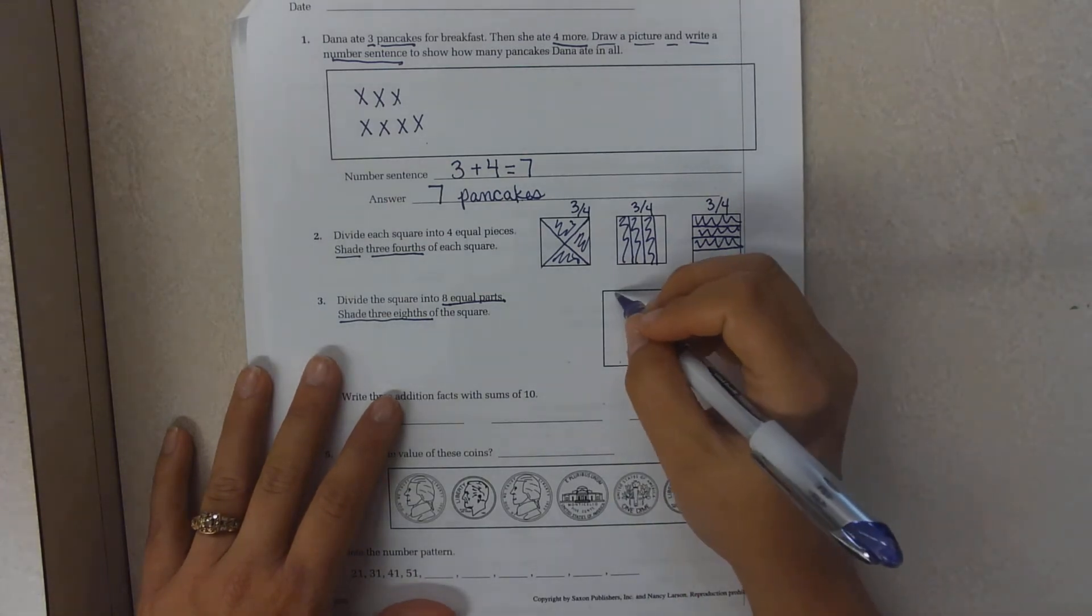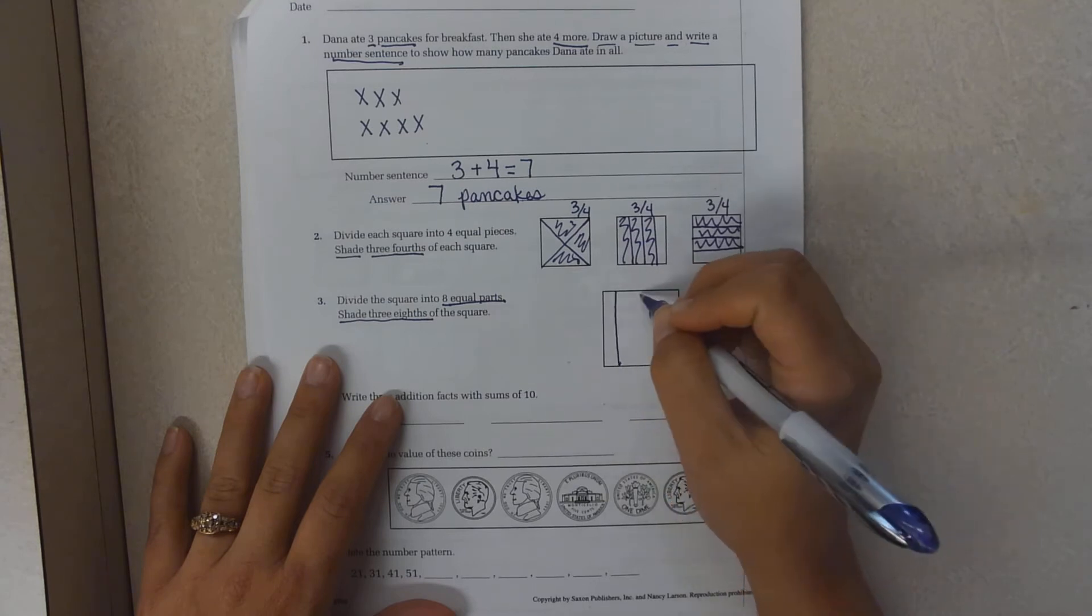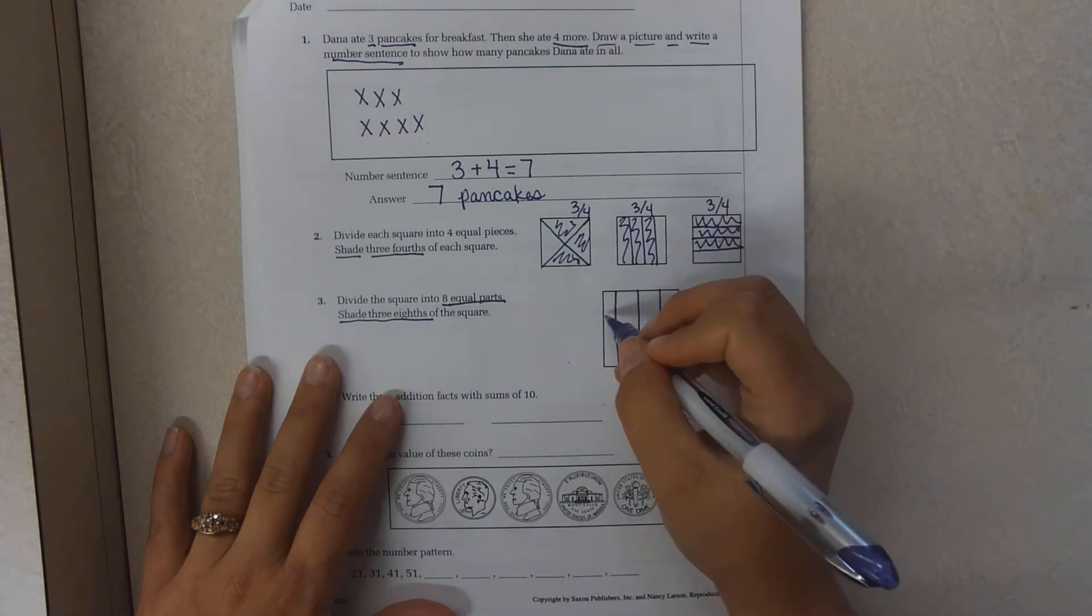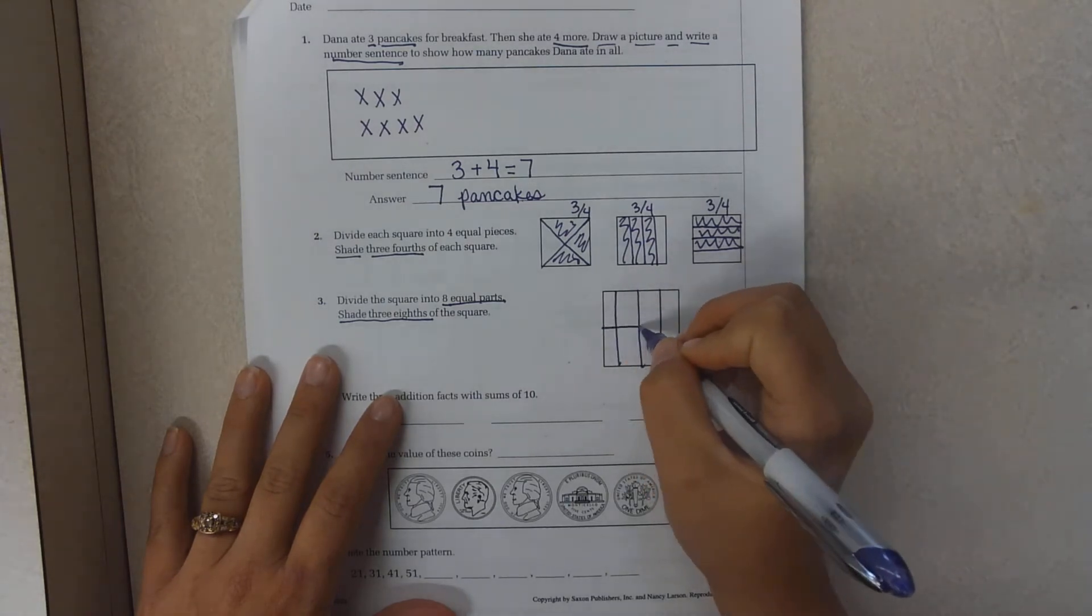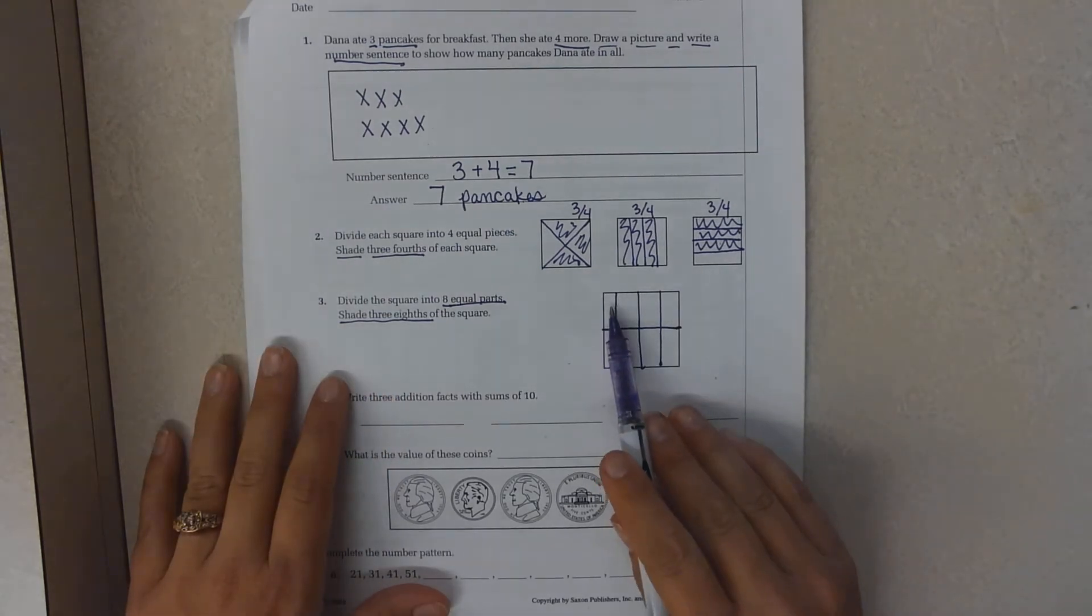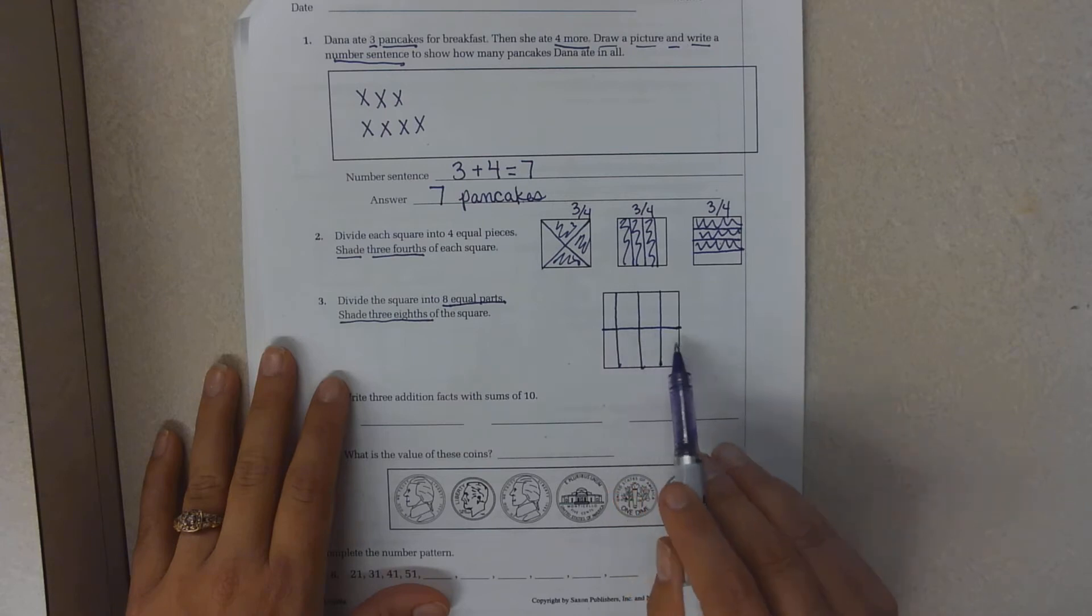So you could do one, two, three. One, two, three, four, five, six, seven, eight.